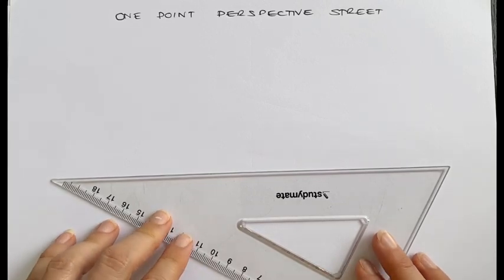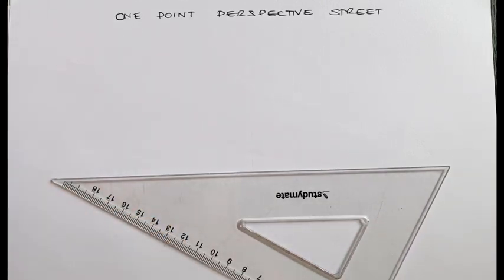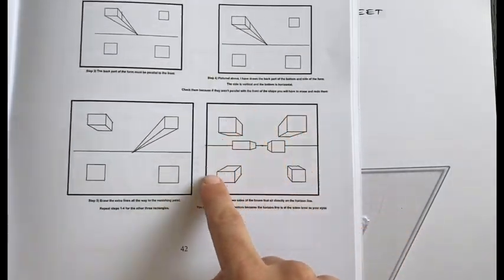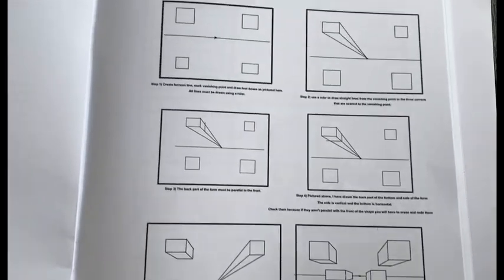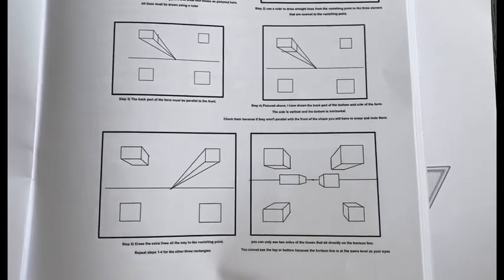We're about to learn how to draw a street from above in one-point perspective. What we're trying to achieve in the end is this image here. So I'm going to talk you through the steps. I'll also attach this as a PDF into Minerva.